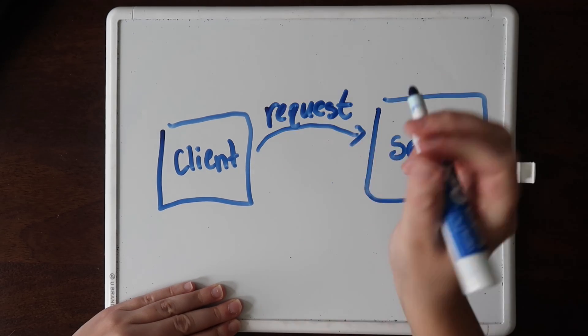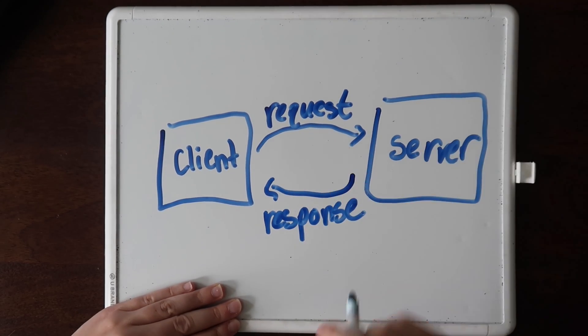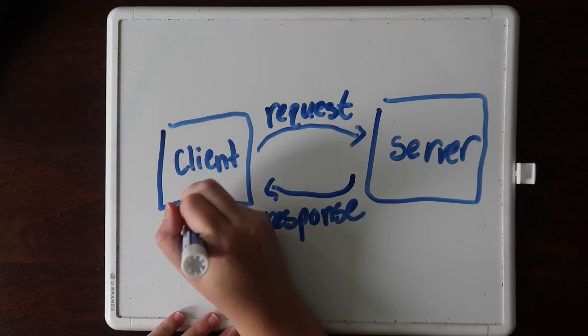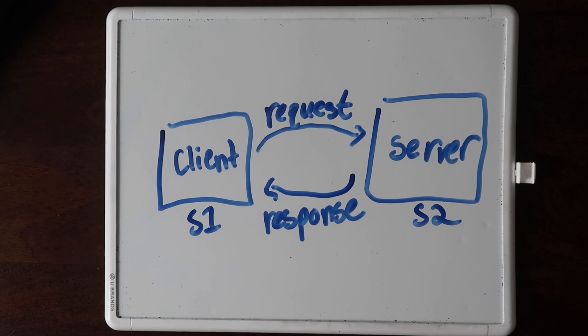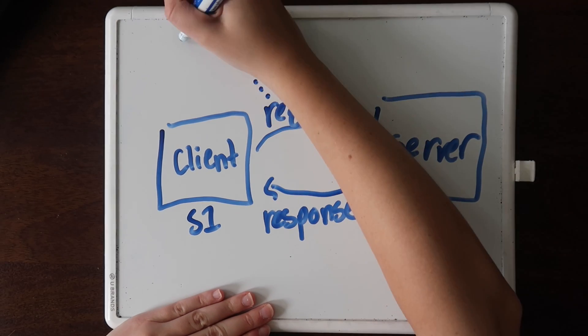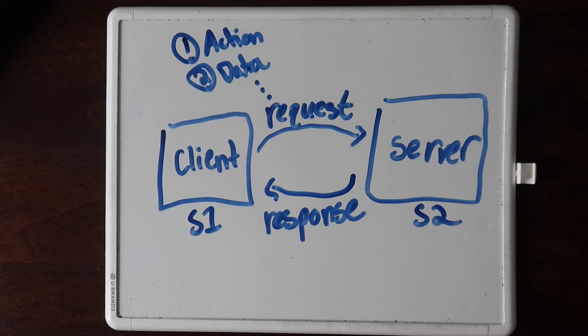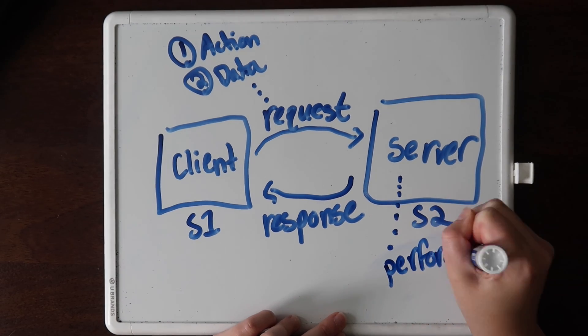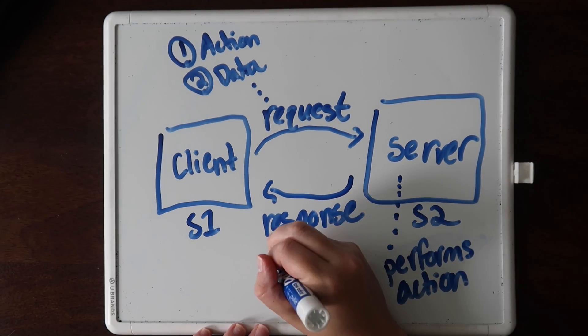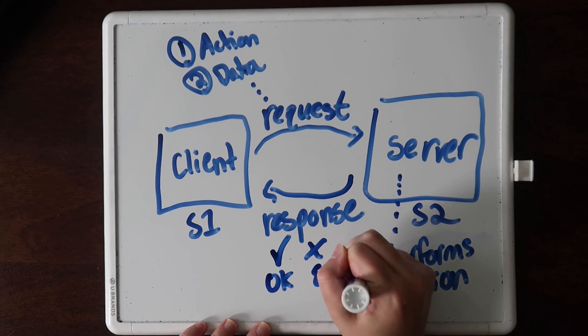API interactions follow a request-response model, where a client sends a request to a server, and the server responds accordingly. They represent two software services. When the client sends the request, they'll include information such as what action they want the second service to take, and any data required for that action. If the server is able to do the action, it will respond with a successful response; otherwise, it'll return an error. Smaller pieces of software use APIs to share and communicate data, which ultimately come together to create large applications.